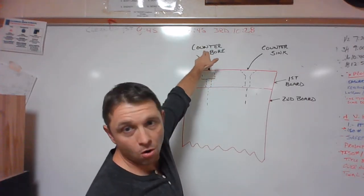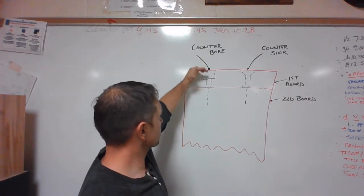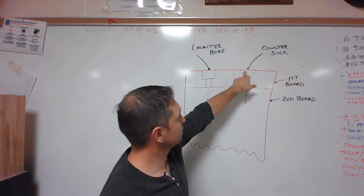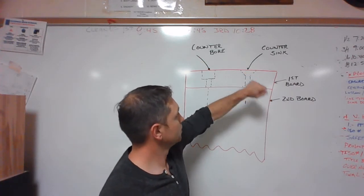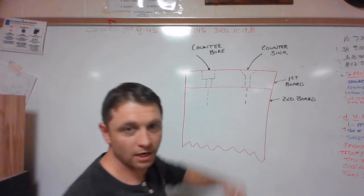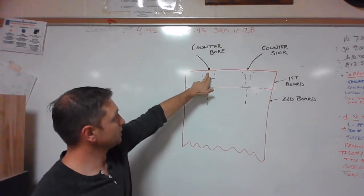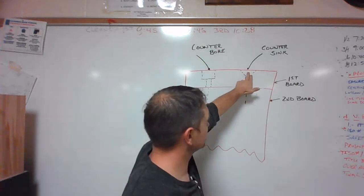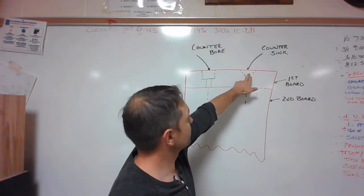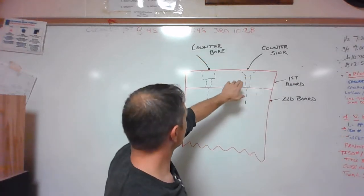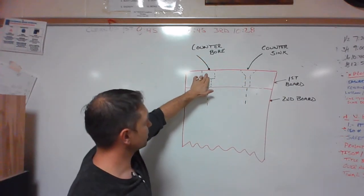A counter bore hole is going to receive a plug so that you are covering the screw, and the counter sink hole is going to set the screw flush with the surface or just below flush so it is not hanging up on anything. So this is a more aesthetically pleasing look. This you are actually going to see the screw head, probably going to exist on the inside of your furniture or inside of your project, where this would exist on the outside.